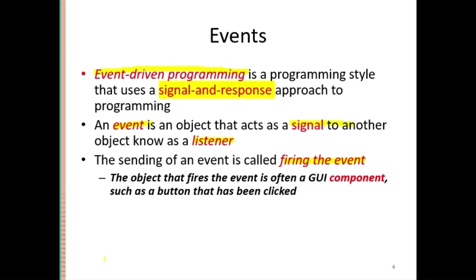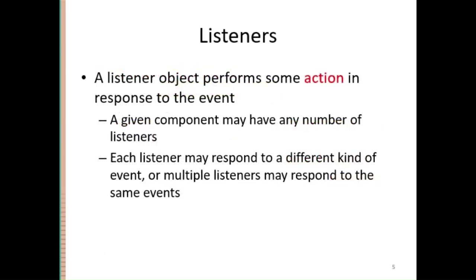In GUI, you can have a number of things — all those things are called components. For example, buttons, labels, and text fields are all components. Whatever you place on a GUI, those things are called components. A listener is an object used to perform some action in response to an event. Whenever an event is fired, it must be listened by a listener, and then some action must be performed by that particular listener.